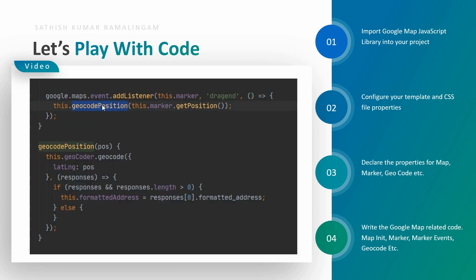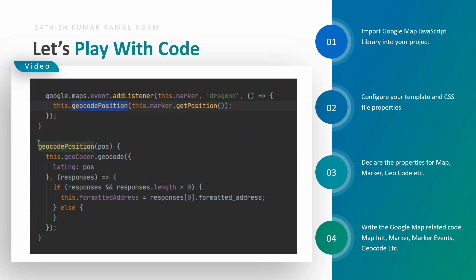Inside the marker drag event, I am calling the geocode position function. It is used to get the particular position address using the geocode service. Inside that function, I am using the geocode service to get the particular address of the marker location using the marker position.